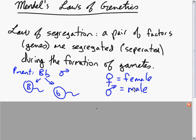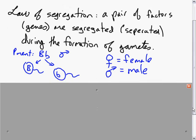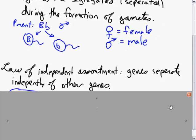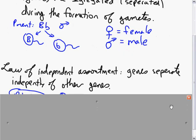There was the law of independent assortment: genes separate independently of other genes.